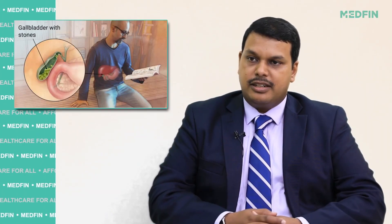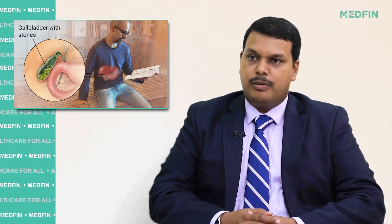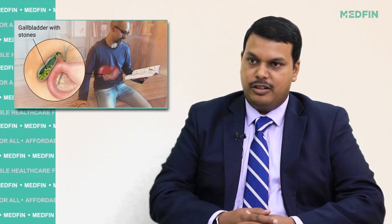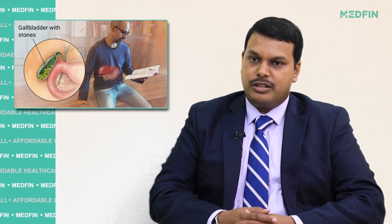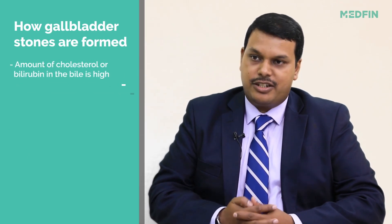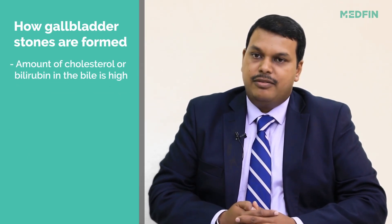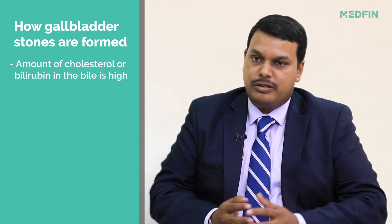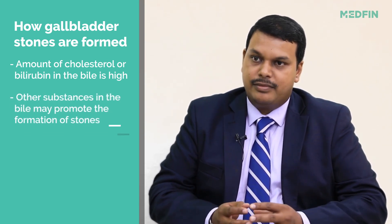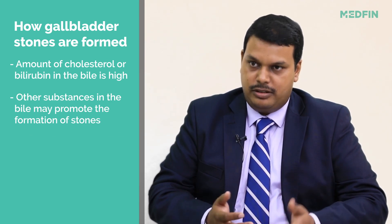Gallbladder stones are small stones which are formed within the cavity of the gallbladder. There are various reasons as to why gallbladder stones are formed. The first and foremost reason is the concentration of cholesterol in the bile. When the concentration of cholesterol goes above a certain level, it tends to clump together and therefore forms a stone.